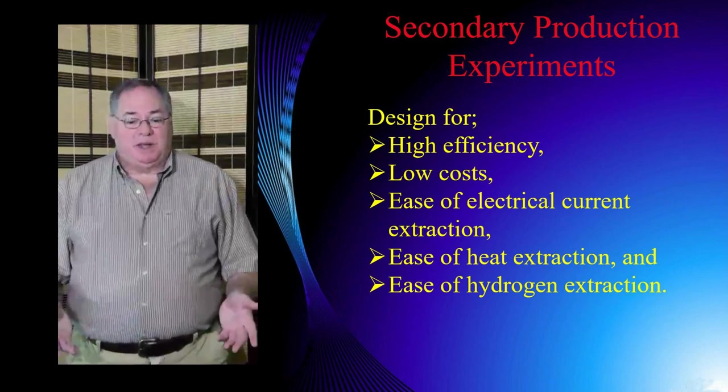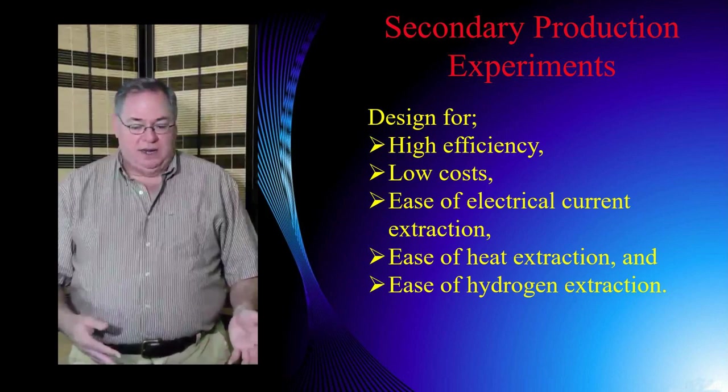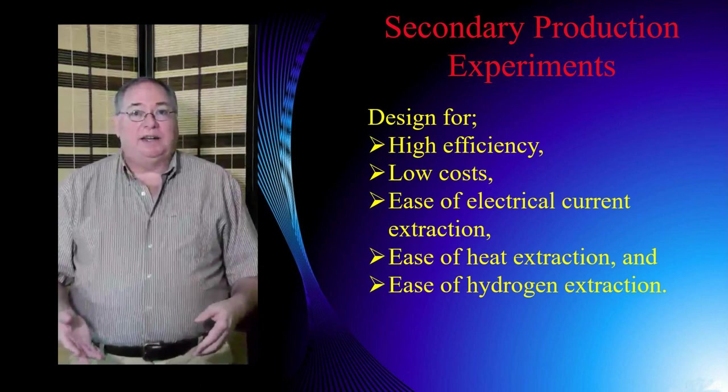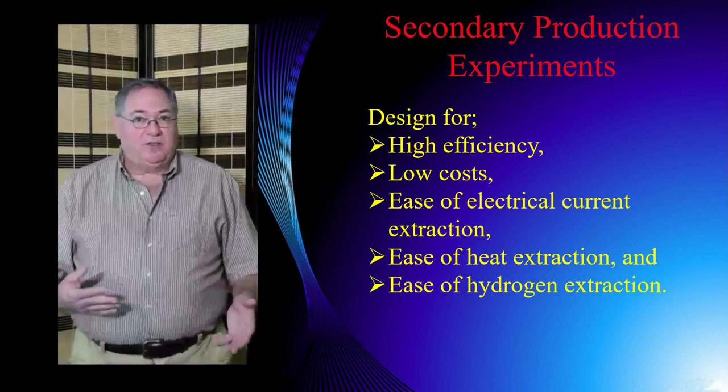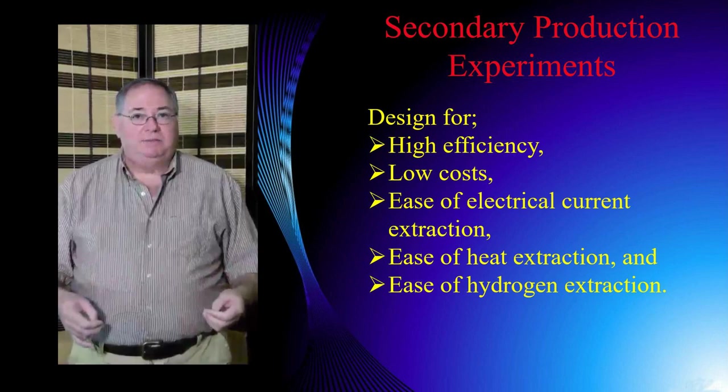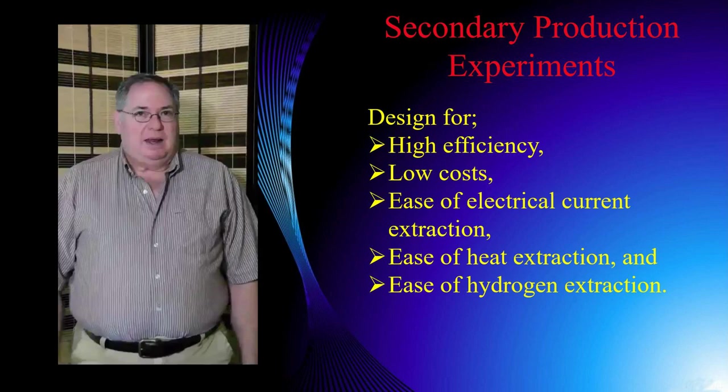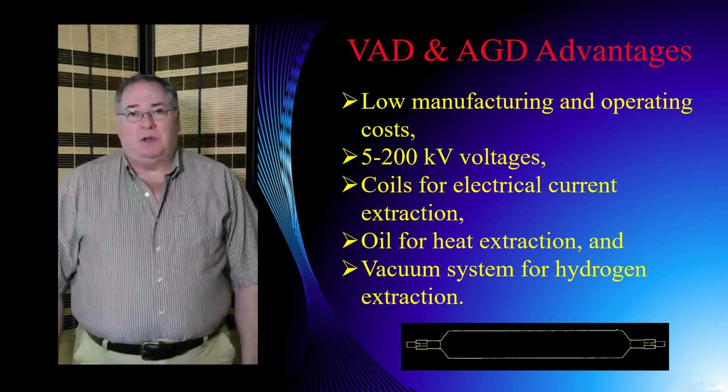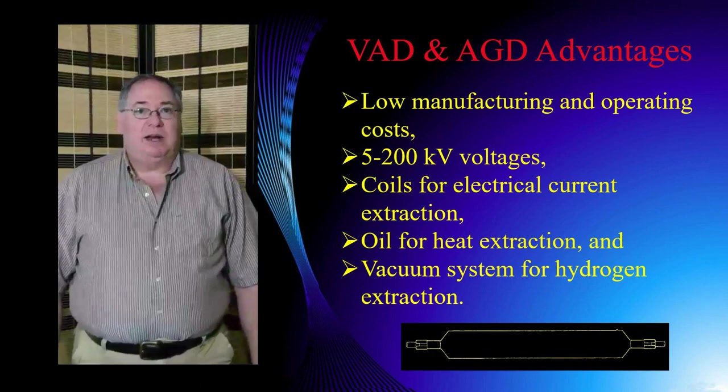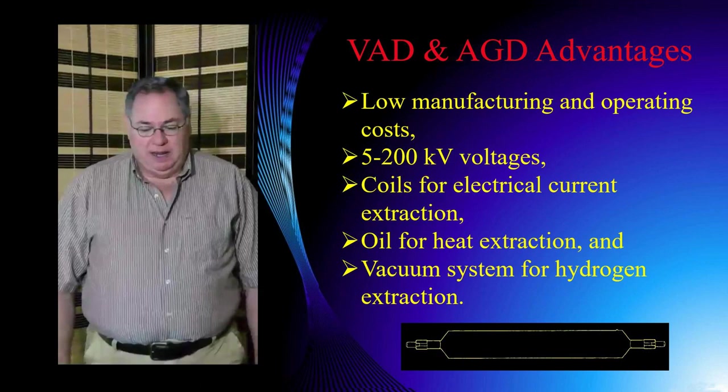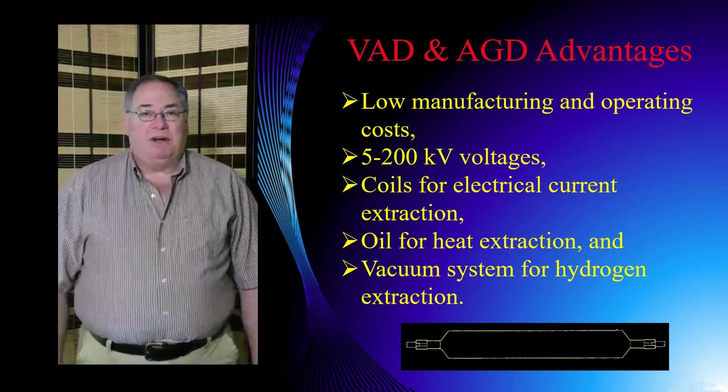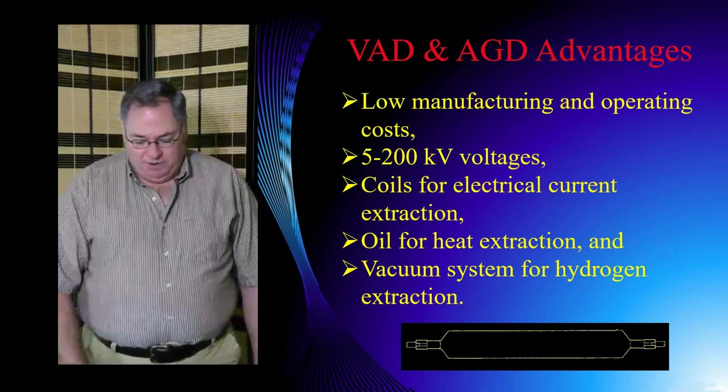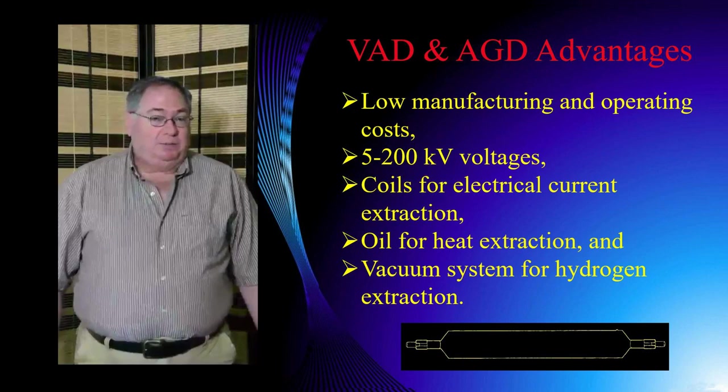But secondary production experiments can be done quite cheaply. They can be designed for high efficiency, low cost. You can design it to try to have an easy way of extracting electric current by use of coils. You can have a way to extract heat and also a way of collecting the hydrogen. Now, I personally prefer vacuum arc discharge and abnormal glow discharge regime type experiments because it's a very simple, low cost apparatus, runs at reasonable low energy, so you don't need highly specialized equipment. And you can have coils for energy extraction, heat extraction through oil cooling systems, and vacuum for extracting the hydrogen.